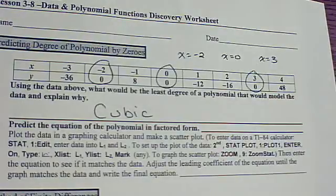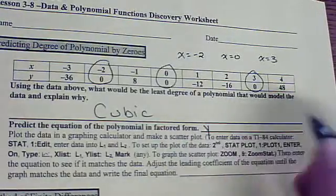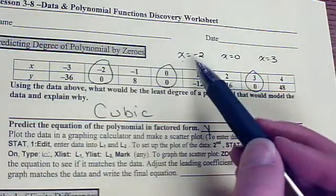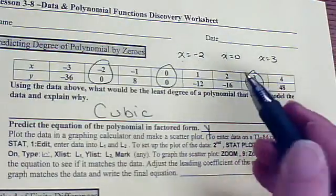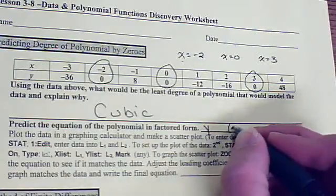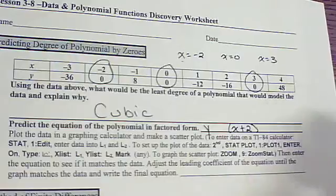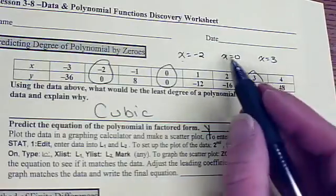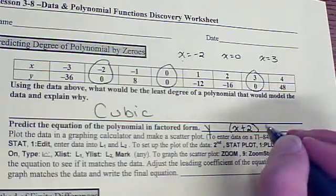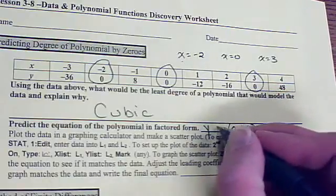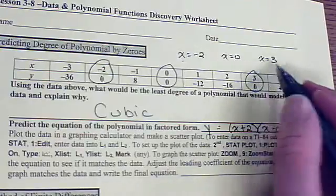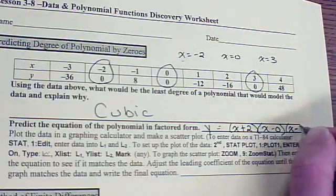If we predict the equation in factored form, think about what factor would give me negative 2 as a solution. That would be x plus 2 equals zero, so one factor has to be x plus 2. To get x equals zero, we could put x minus zero, or just x. And to get 3, that's going to be x minus 3.